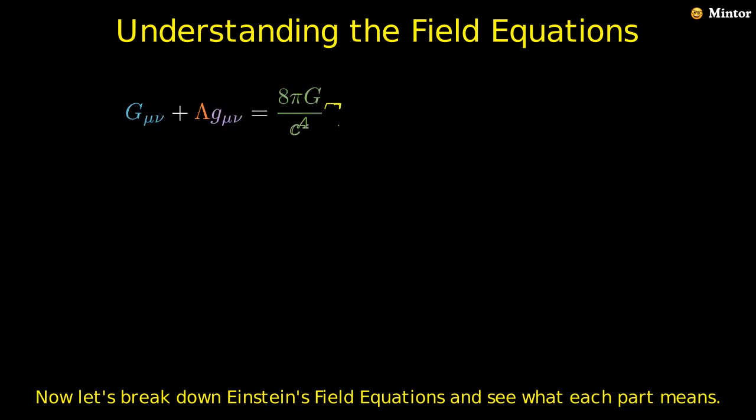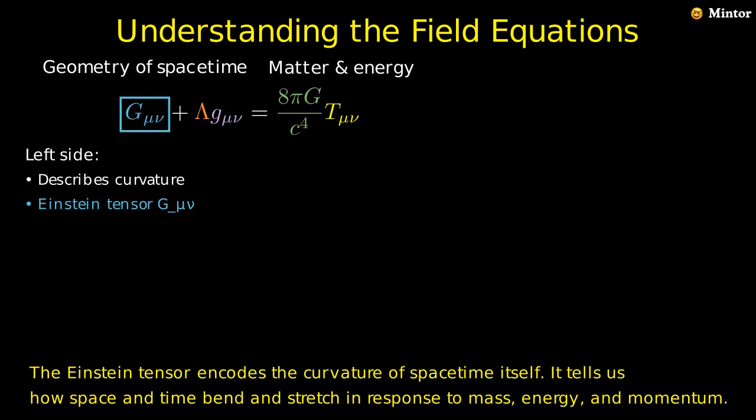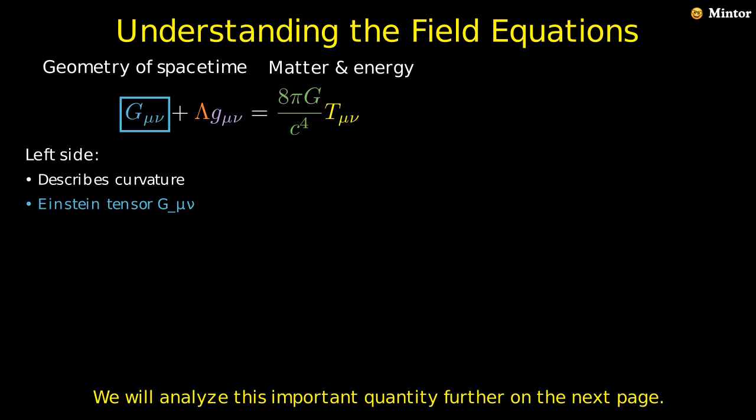Now let's break down Einstein's field equations and see what each part means. The left side describes how spacetime is curved. The right side tells us how matter and energy are distributed within that spacetime. The Einstein tensor encodes the curvature of spacetime itself. It tells us how space and time bend and stretch in response to mass, energy, and momentum. We will analyze this important quantity further on the next page.